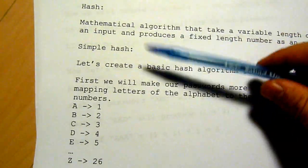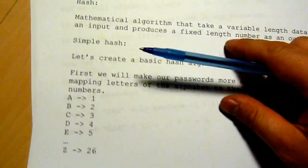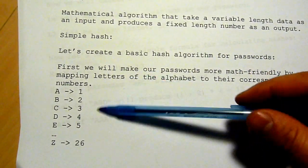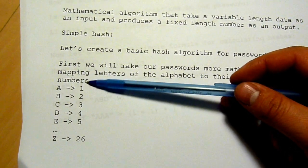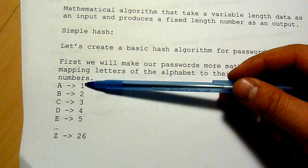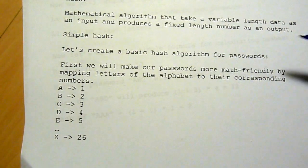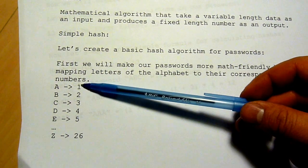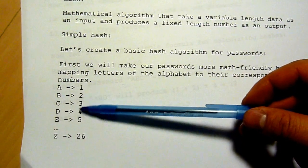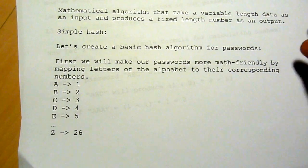So let's create a simple hash function. For ease of understanding, we'll try to calculate hashes of text passwords, and to make the calculation more math-friendly, we'll substitute each letter with its corresponding number in the alphabet. So A will be 1, B will be 2, C will be 3, and so on, until we get to Z.